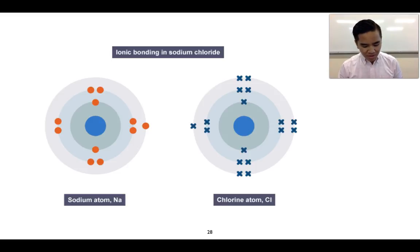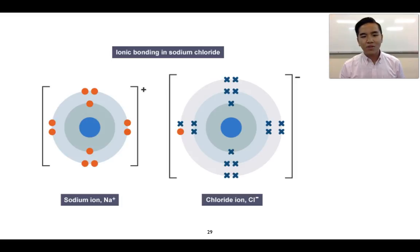What happens is the sodium atom can donate one of its electrons to the chlorine atom. When it does that, it results in the formation of ions: sodium forms a sodium ion, chlorine forms a chloride ion. Sodium is positively charged, chloride is negatively charged. Opposites attract, and as a result we've formed an ionic bond between these two ions.